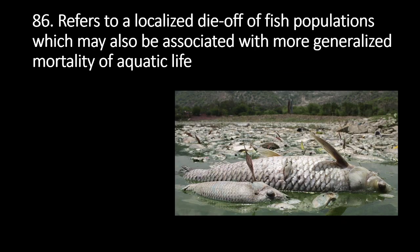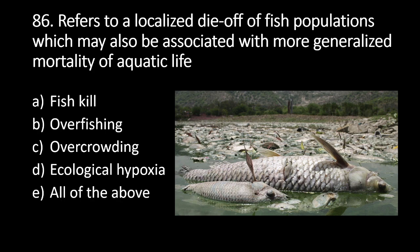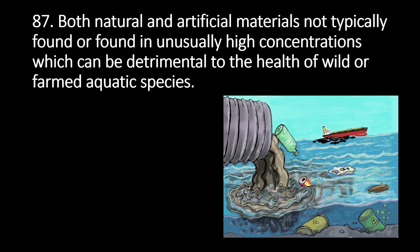Number 86: this refers to a localized die-off of fish populations which may also be associated with more generalized mortality of aquatic life. A. Fish kill, B. Overfishing, C. Overcrowding, D. Ecological hypoxia, E. All of the above. The answer is A. Fish kill. A fish kill refers to a localized die-off of fish populations which may also be associated with more generalized mortality of aquatic life.